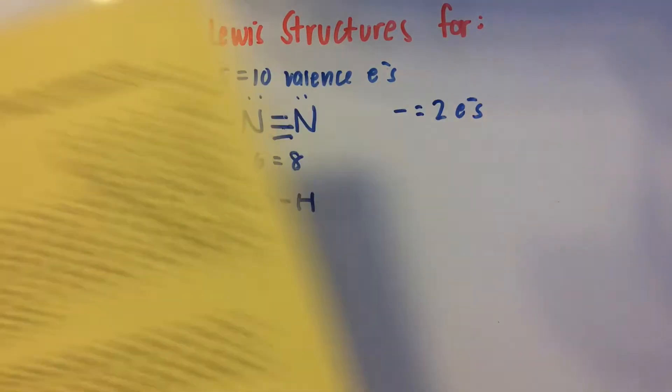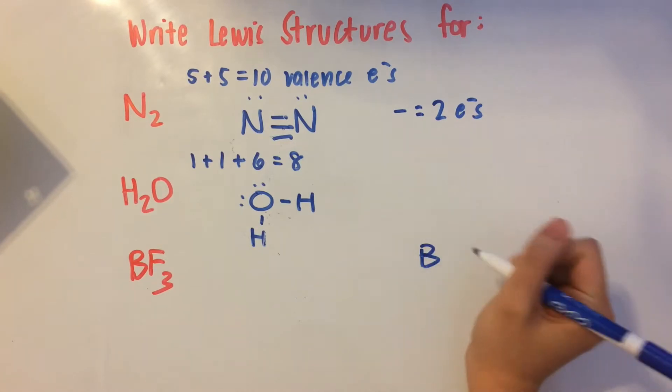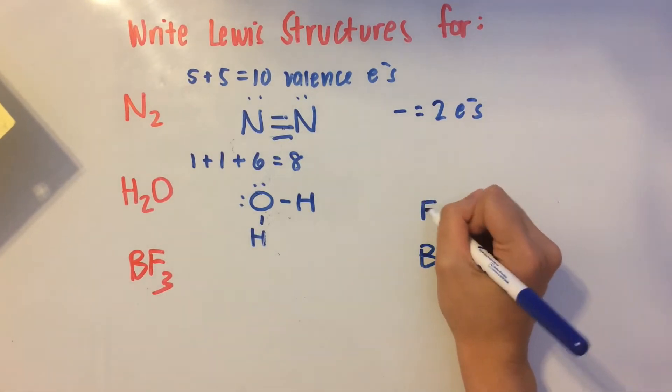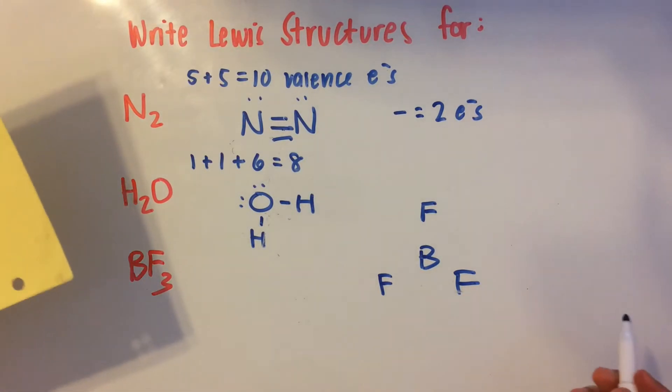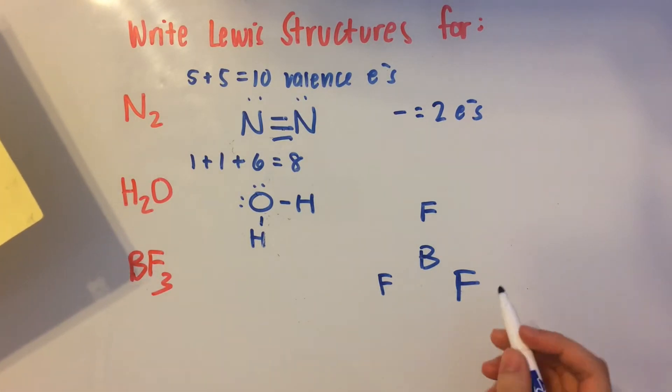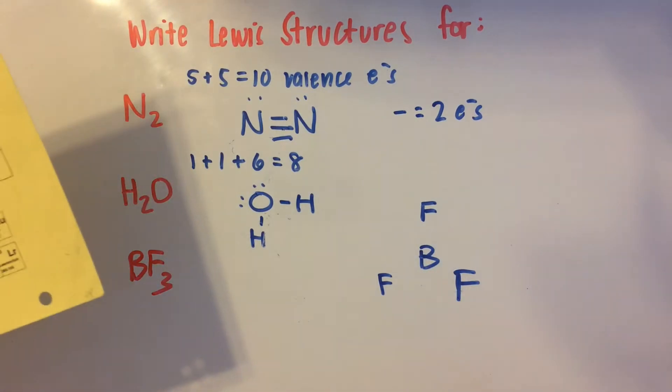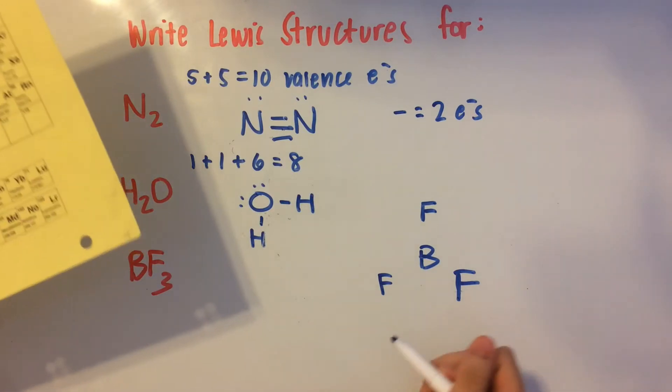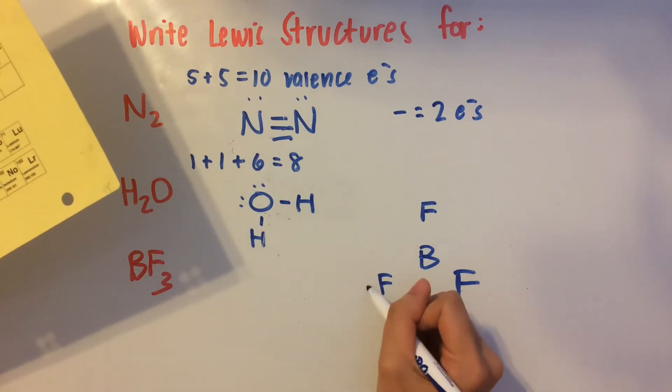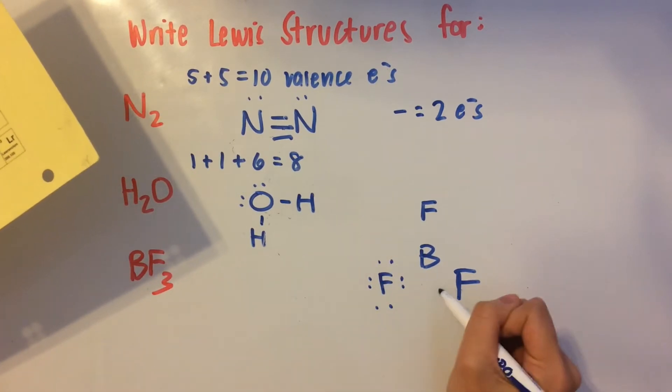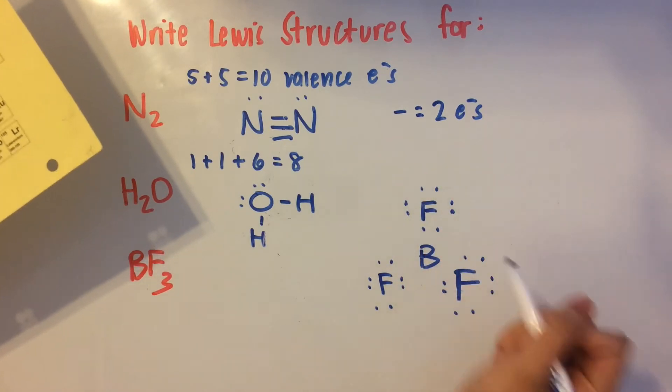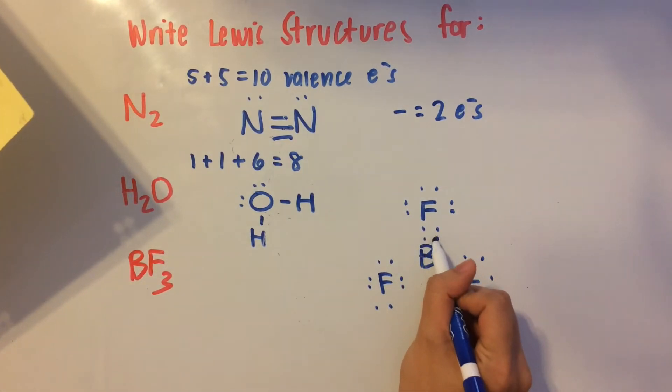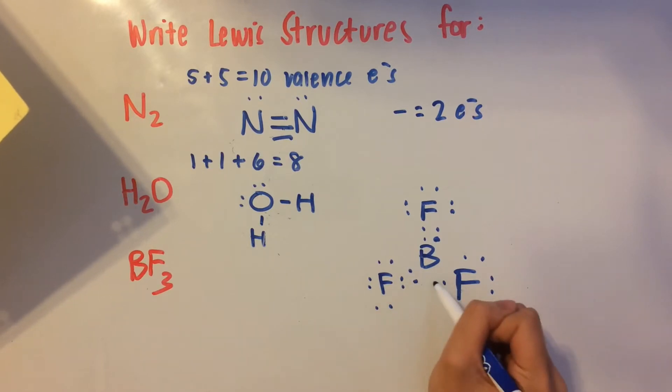Now, last one, BF3. I'm going to write that over here. So we have B, F, F, and F. Remember, boron is an exception to the rule, for the octet rule. So boron, actually, it can just have six valence electrons surrounding it, not eight. So what we can do is these fluorines need an octet. So I'm just going to surround the fluorines with it.